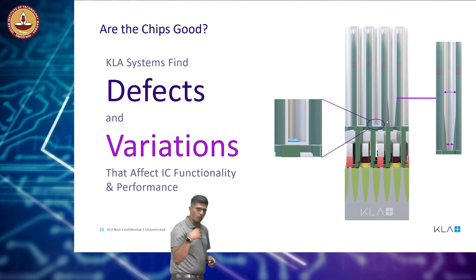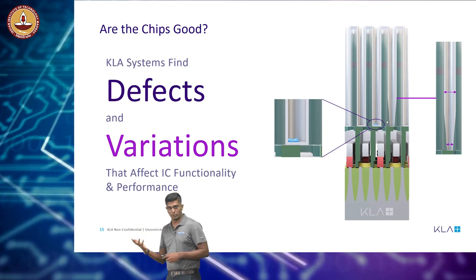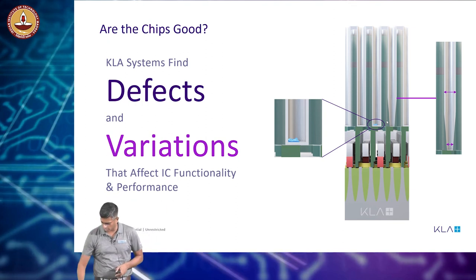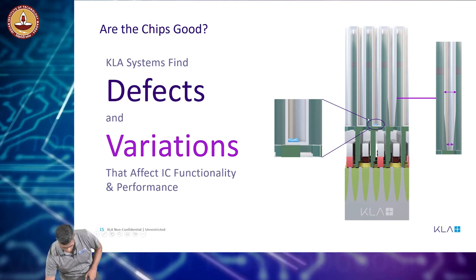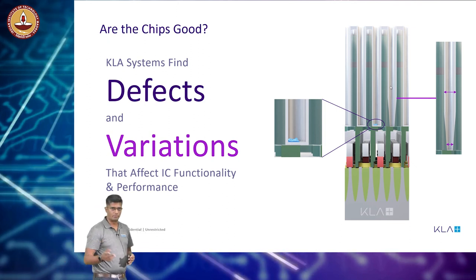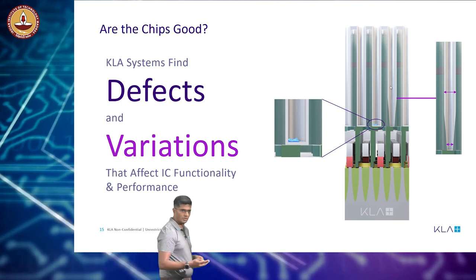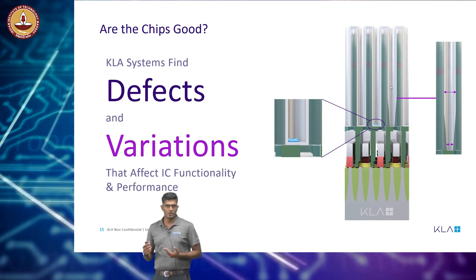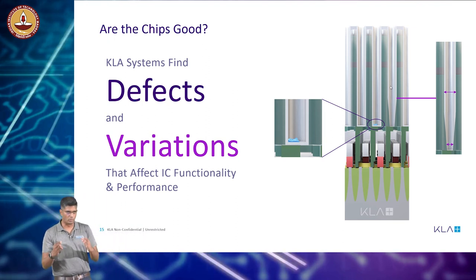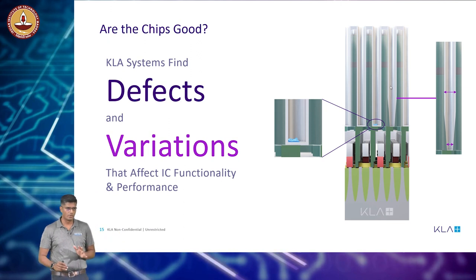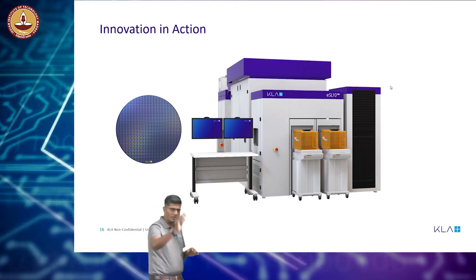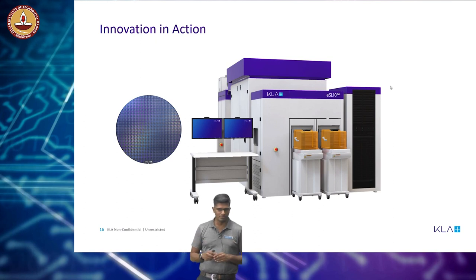In addition to finding defects, we are also interested in variation. As I told you, when you try to draw straight lines they are no longer perfectly straight. For example, here we are trying to manufacture a vertical cylindrical column, but you actually get a shape that is slightly different. However, it might be acceptable. So we have metrology tools that measure variation that could affect IC performance. All of this is primarily done with image processing, and today those image processing algorithms are augmented by AI.